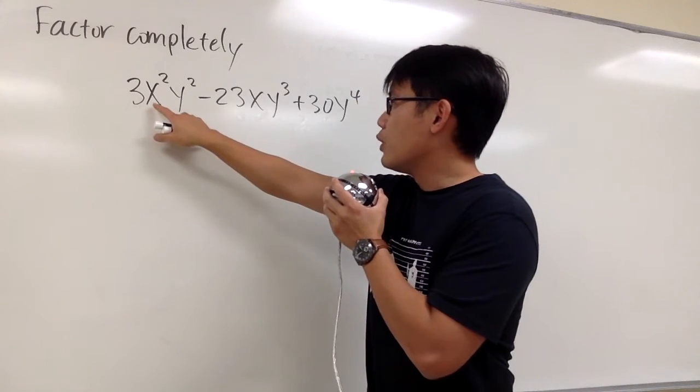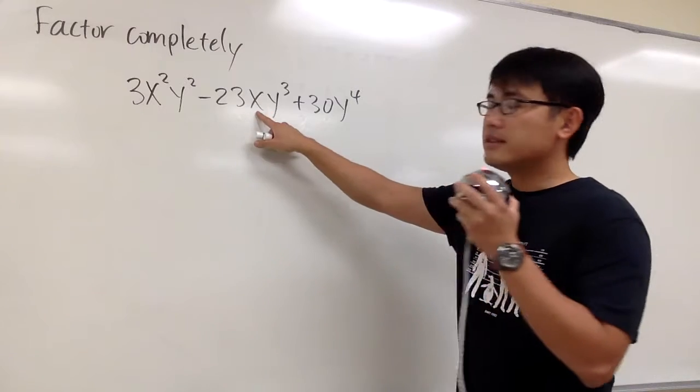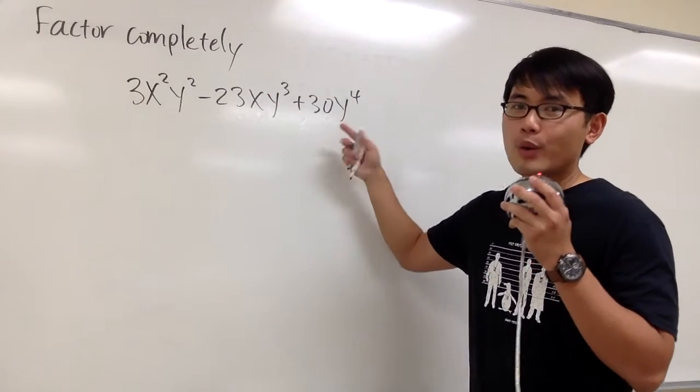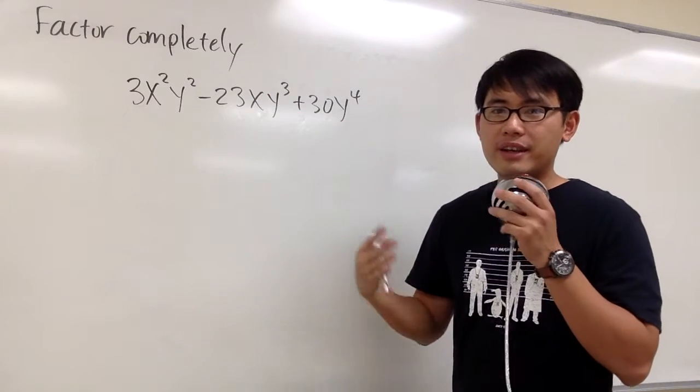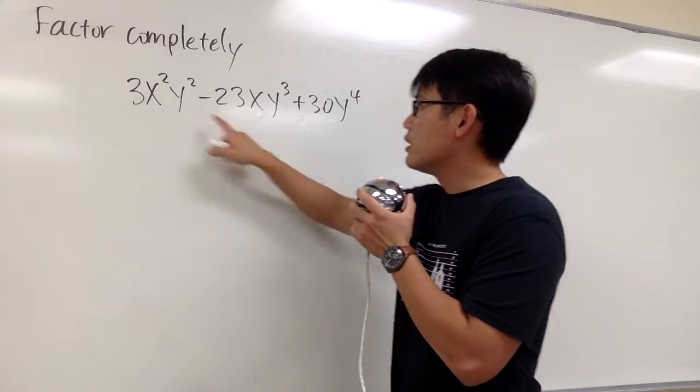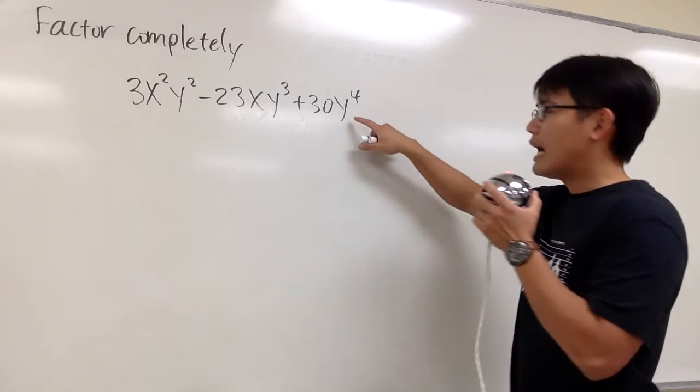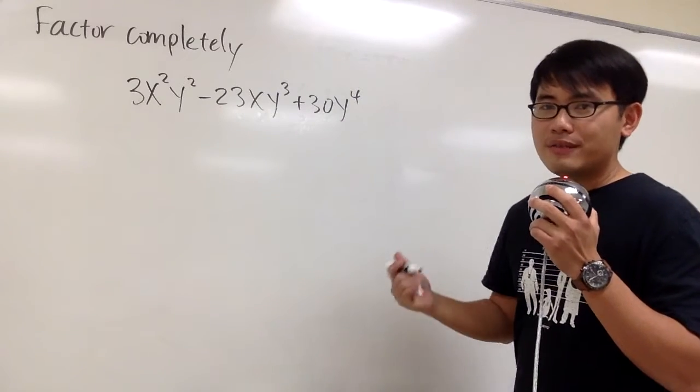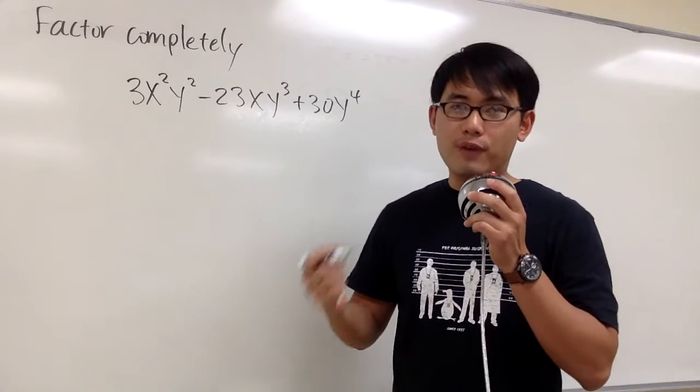And you see that for the first term, we have x², and then this is just an x, but then for the third term, we have no x, so I cannot take out any x. But then, the first term has y to the 2nd power, and here we have y to the 3rd power, and the last term we have y to the 4th power, so in fact we can factor out a y² first.